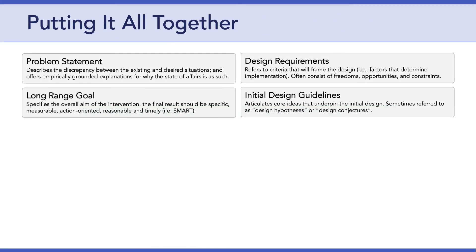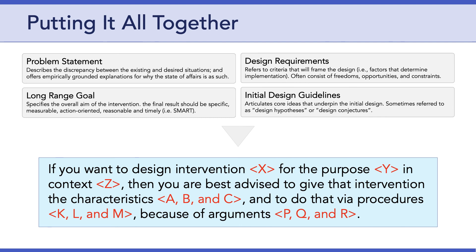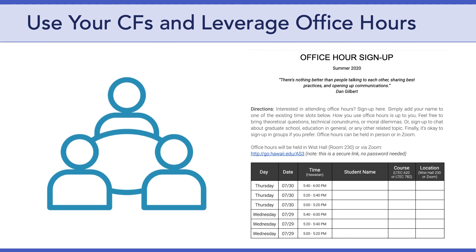Ultimately, we're going to put all of this together — take the outputs and begin to flesh out our overall design argument. As you're working, begin to plug in these variables to complete your design argument; this is the direction we're moving in week by week. Before we end, use your critical friends meetings and leverage office hours for guidance through this process. I've put office hours for this coming Wednesday and Thursday, both evenings from 5 to 6 p.m., and I can add more slots if necessary. Have a great week, and I'll see you in Canvas.